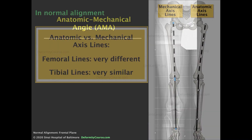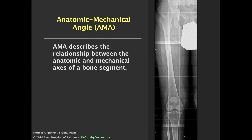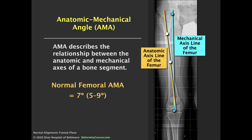In the femur, there is an angle known as the anatomic-mechanical axis angle, which describes the relationship between the anatomic and mechanical axes of this bone segment. The mechanical axis of the femur goes from the center of the hip joint — the center of the femoral head — to the center of the knee joint, splitting the condyles. The anatomic axis is defined as a mid-diaphyseal line halfway between outer cortices along the axis of the bone.